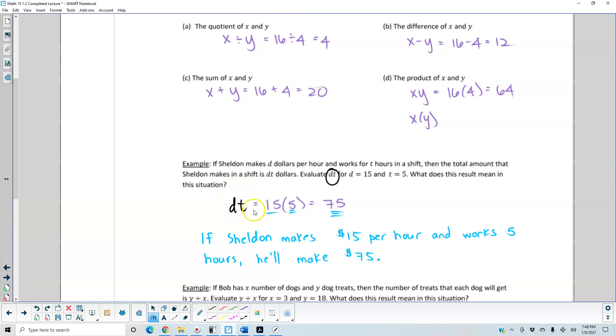So dt, we're going to plug in 15 for d, and t is going to equal 5. So 15 times 5 is equal to 75. Now, what does this result mean in this situation? Well, that means that if Sheldon makes $15 per hour and works 5 hours, then he'll make $75.